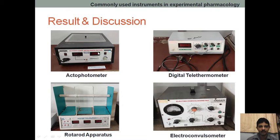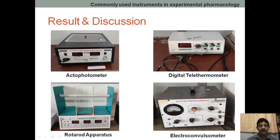In the actophotometer, as already shown, there are three sets of photocells and light sources. We keep the mice in this cage and the mice are moving. During the movement of the mice, how many times the mice restrict the light falling on the photocell is counted — that count will be recorded here.